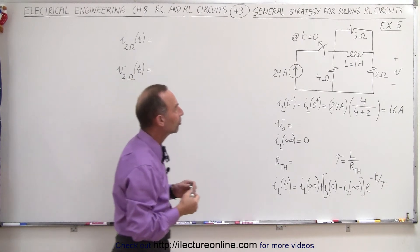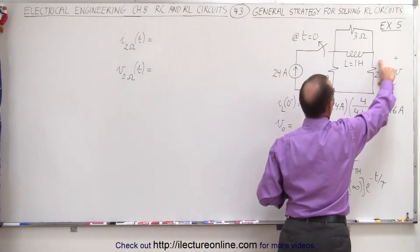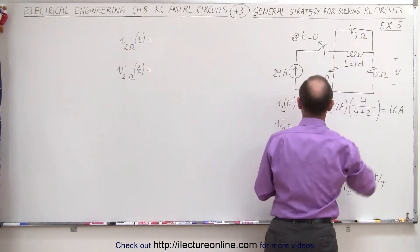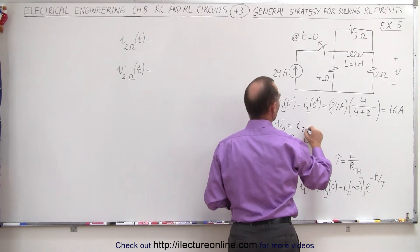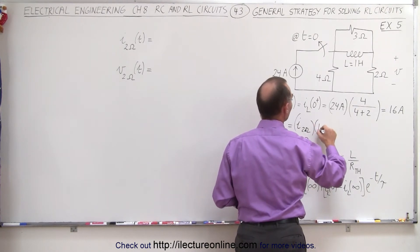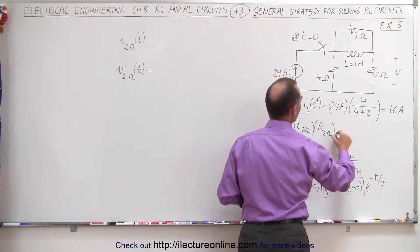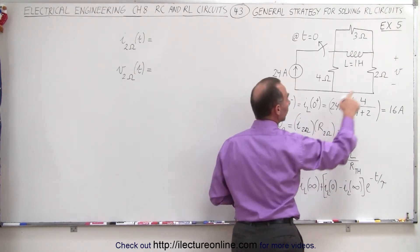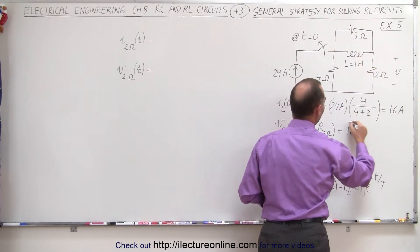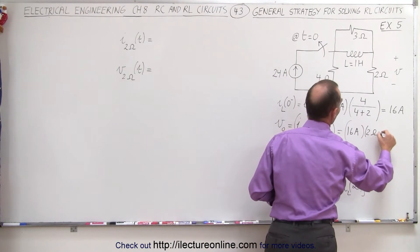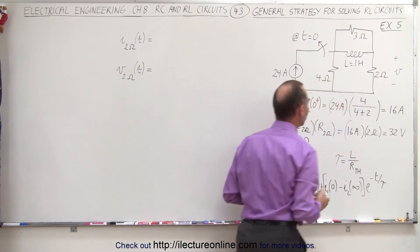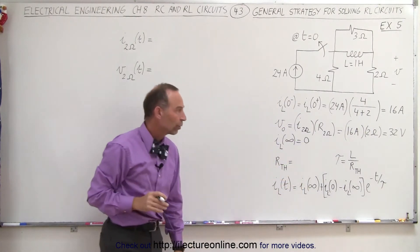What is the voltage initially across the 2-ohm resistor? Well, whatever the current is going through here, notice that the voltage is going to be the current I through the 2-ohm resistor times the resistance of the 2-ohm resistor. So in this case, that's going to be equal to 16 amps — because it's the same current as goes through the inductor — times the resistance of 2 ohms, which means we have a 32-volt drop across the 2-ohm resistor before the switch opens up.